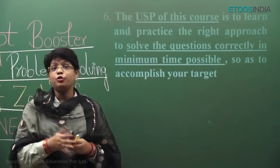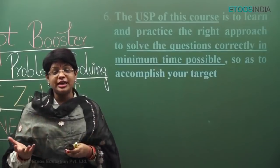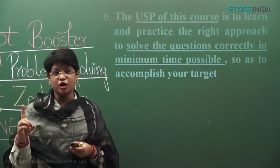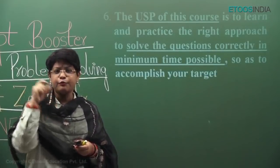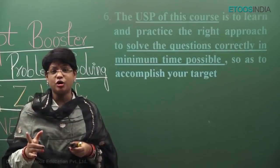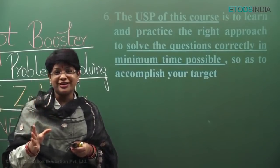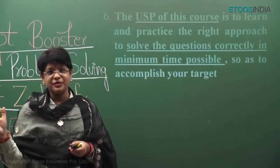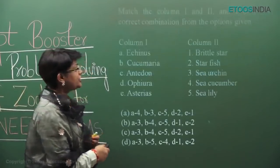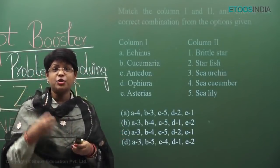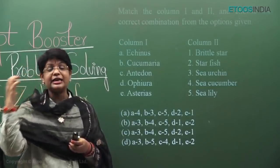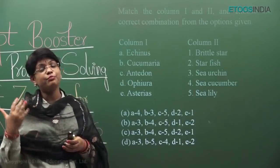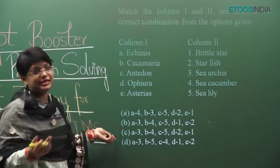We have learned various tricks, like how to solve assertion-reason questions. Many students get confused between option A and B — whether the reason is the correct explanation for the assertion or not. So what is the full proven trick to solve AR questions without getting them wrong? What is the full proven trick to solve MCQs in minimum time? We will learn all these tricks and also practice them, because it is not just about learning — only through practice will your brain, eye, and hand coordination be perfected for the exam.